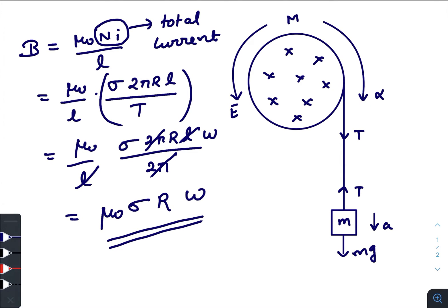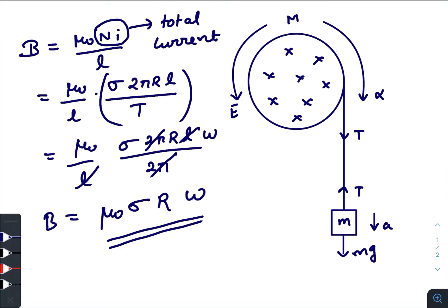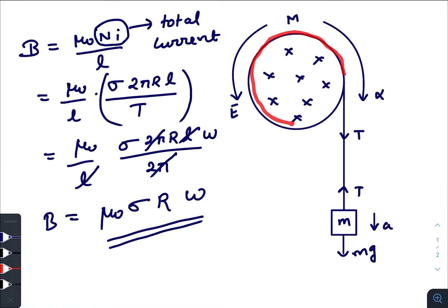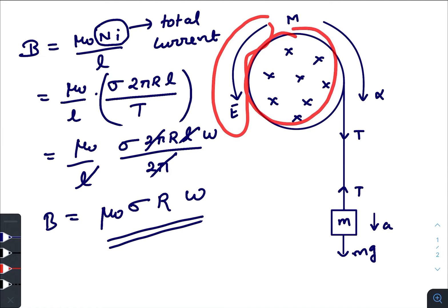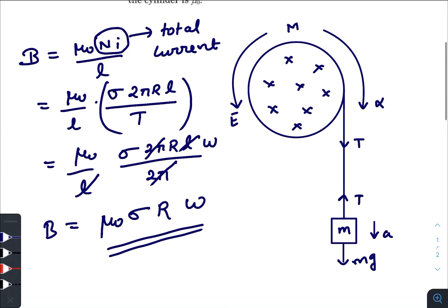Due to the angular acceleration α, the angular velocity increases, hence the magnetic field increases, and due to this increase in magnetic field there will be an increase in flux through the cylinder. Due to this increase in magnetic flux there will be an induced electric field in the direction opposite to the actual conduction current. This electric field will exert a reverse force on the cylinder — the tension creates a clockwise torque and this induced electric field will create an anti-clockwise torque.